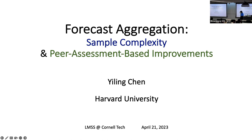Hey everyone, both in the room and over Zoom. Thanks for another — I think third to last — iteration of the Learning Machine Seminar for this calendar year. We're really lucky to have Ewing Chen. Professor Chen is at Harvard as part of the School of Engineering and Applied Sciences, affiliated with the Center for Research on Computational Society. Ewing is very prominent in machine learning, economics, and CS — her research sits at the intersection of computer science and economics, especially in social computing, where human creativity and resources are harnessed for computational tasks.